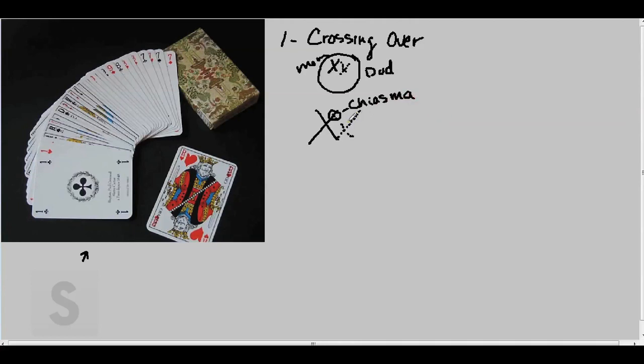A lot of times when they form this chiasma, they'll actually exchange arms of the chromosome. What you'll end up with is a chromosome that mostly comes from mom with a little bit of dad. Alternatively, you end up with a chromosome that's mostly dad but ends up with a little bit of mom.